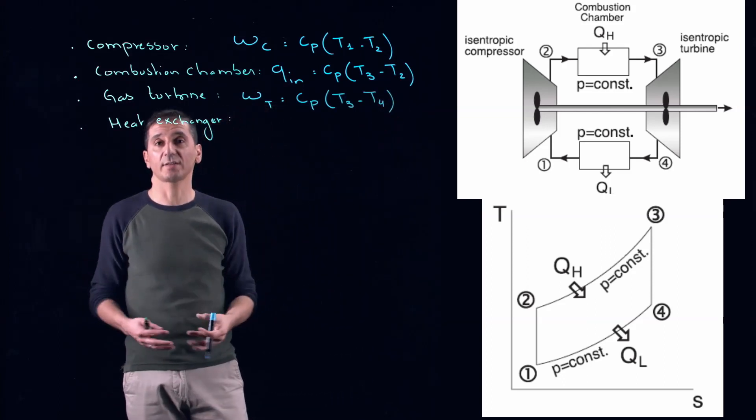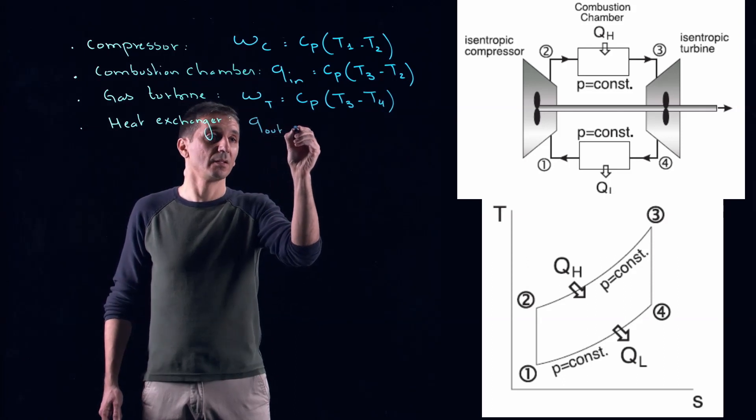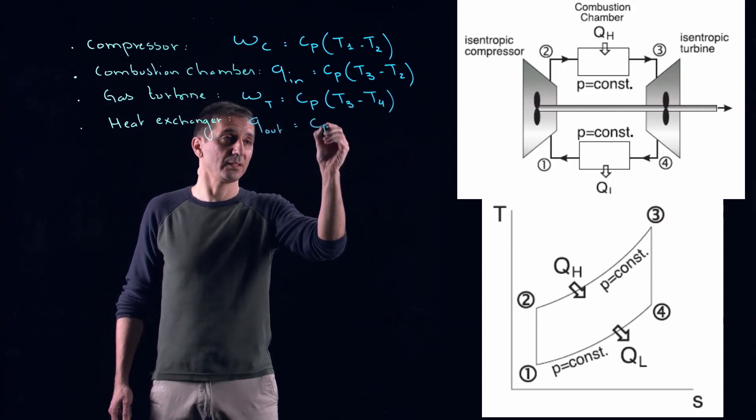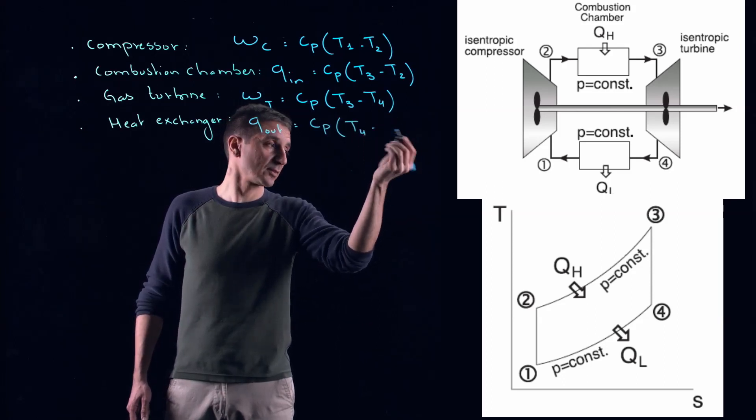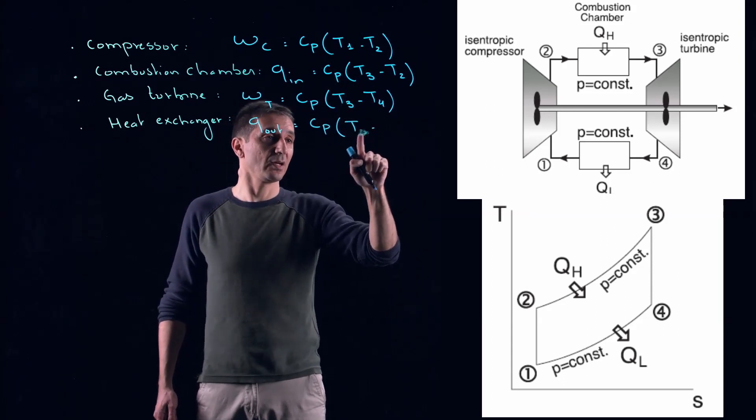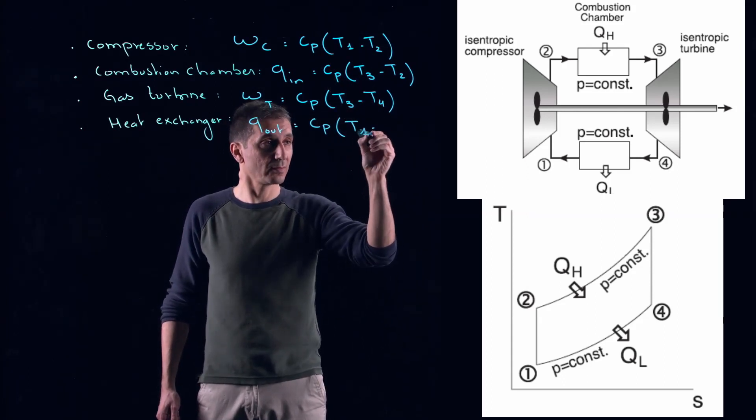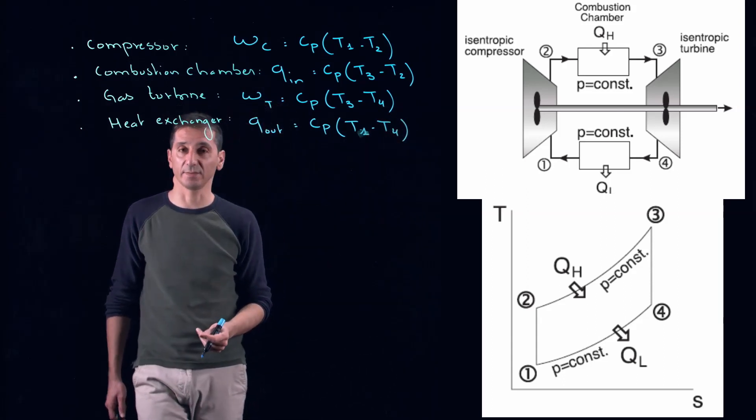And the last one where we are ejecting heat, our Qout is equal to Cp T4 minus T1 actually, to follow the same convention here, I will be starting with T1 minus T4. And this will give me something which is negative.